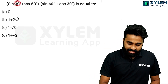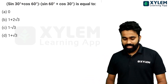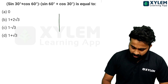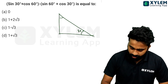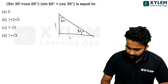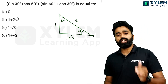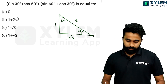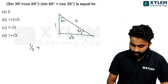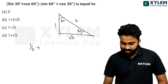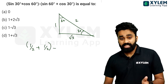If we are going to apply the values, we will talk about the UCM method. It's a right triangle. We will talk about the UCM method — that is adjacent by hypotenuse minus sin 60.